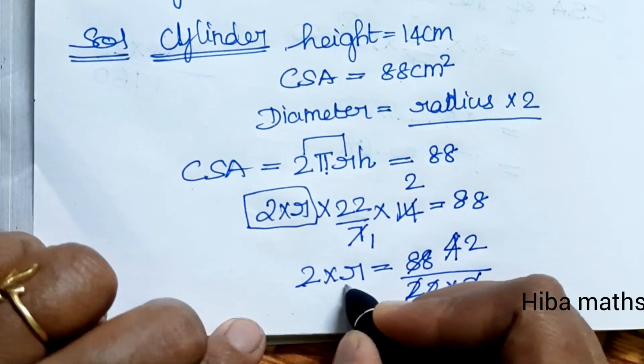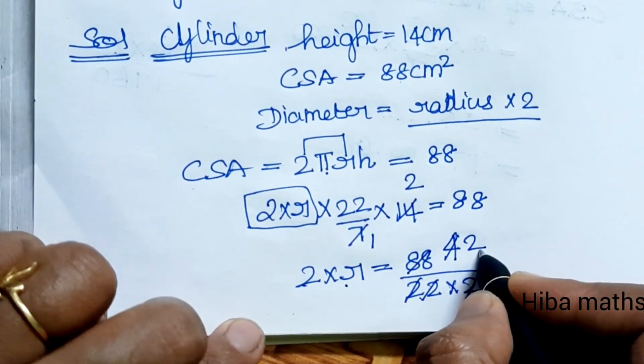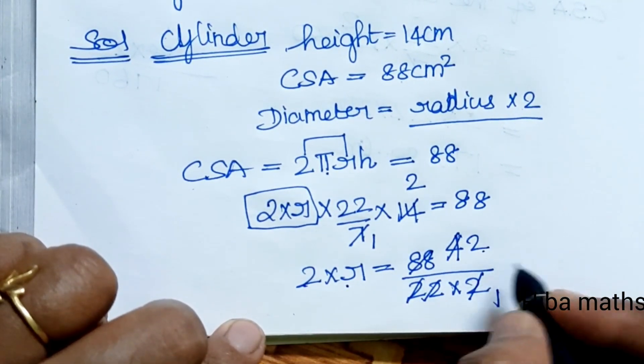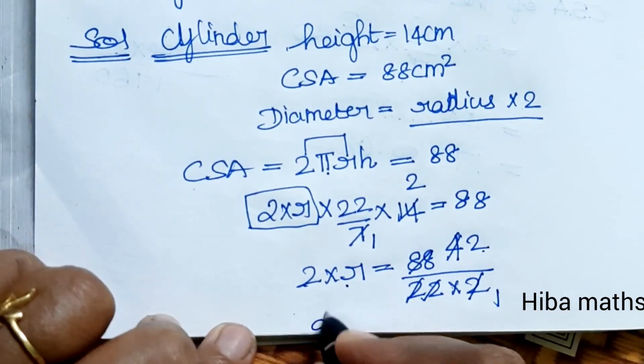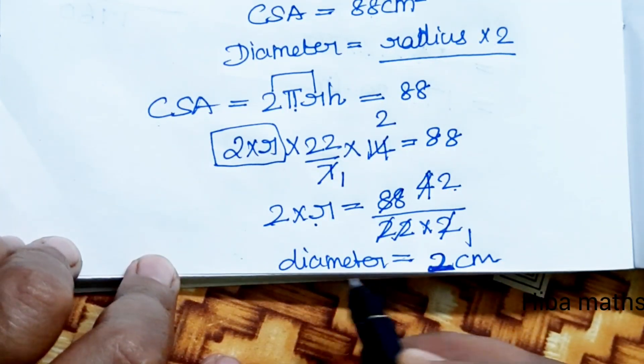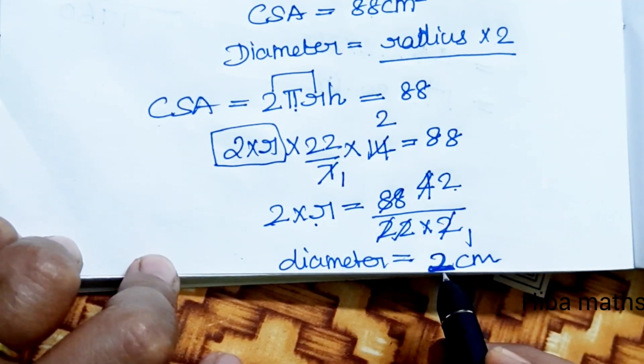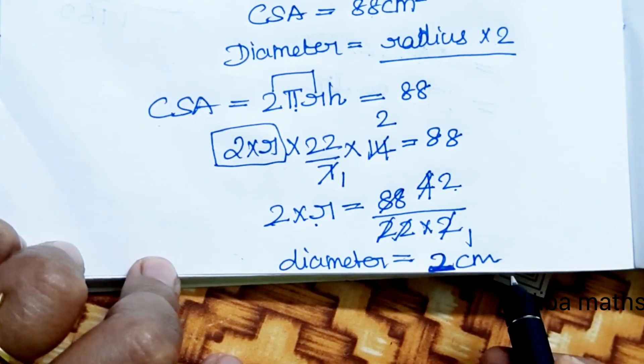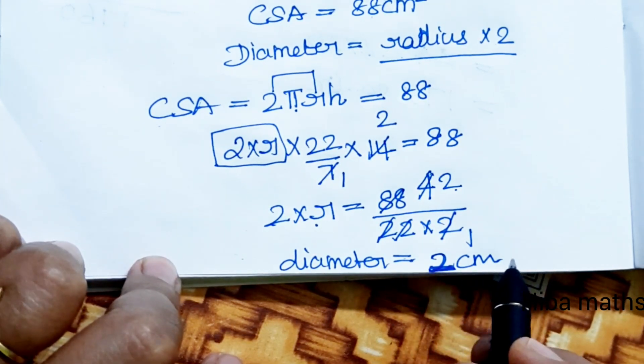2 into R is the diameter, which equals 2 centimeters. The diameter is 2 cm. Thank you so much for watching.